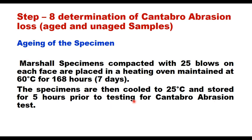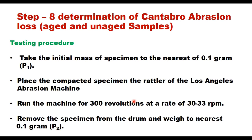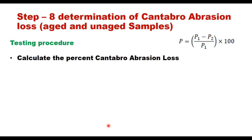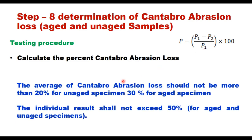The testing procedure: take the initial mass of the specimen to the nearest 0.1 g (P1), place in the Los Angeles machine drum, run for 300 revolutions at 30–33 rpm, remove the specimen, and weigh to the nearest 0.1 g (P2). Percent loss = (P1 − P2) / P1 × 100. The average Cantabro abrasion loss should not exceed 20% for unaged specimens and 30% for aged specimens. Individual results shall not exceed 50% for either aged or unaged specimens.